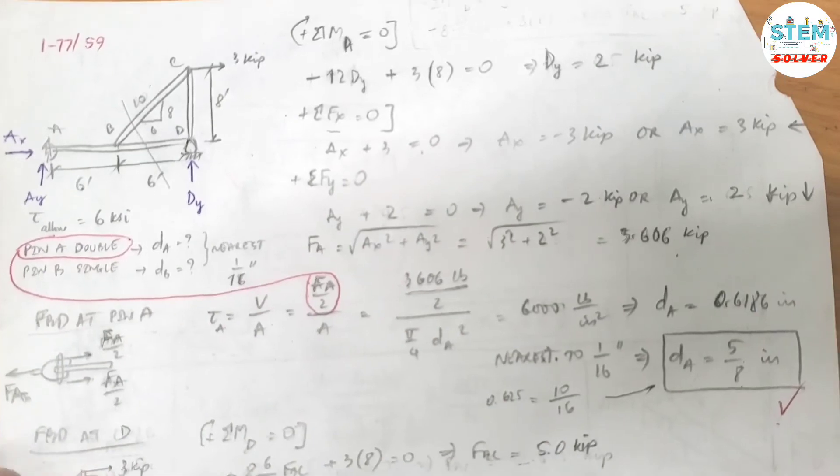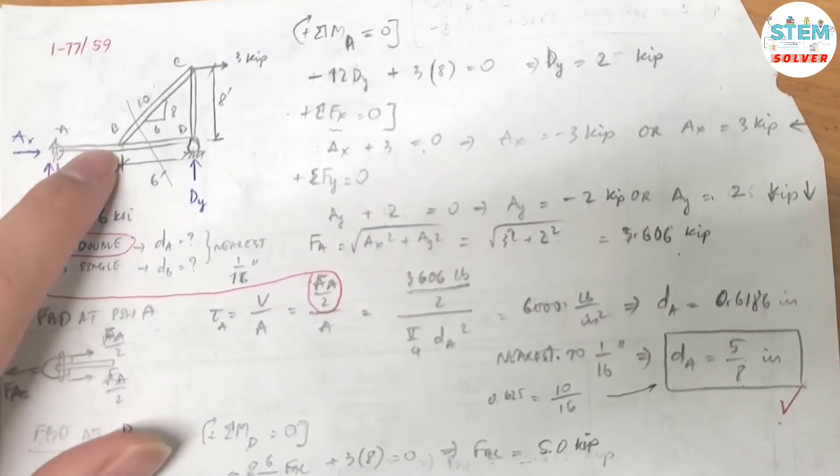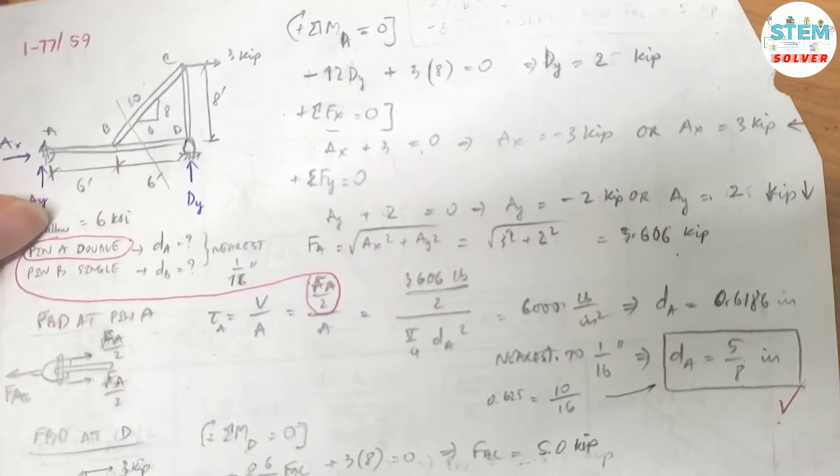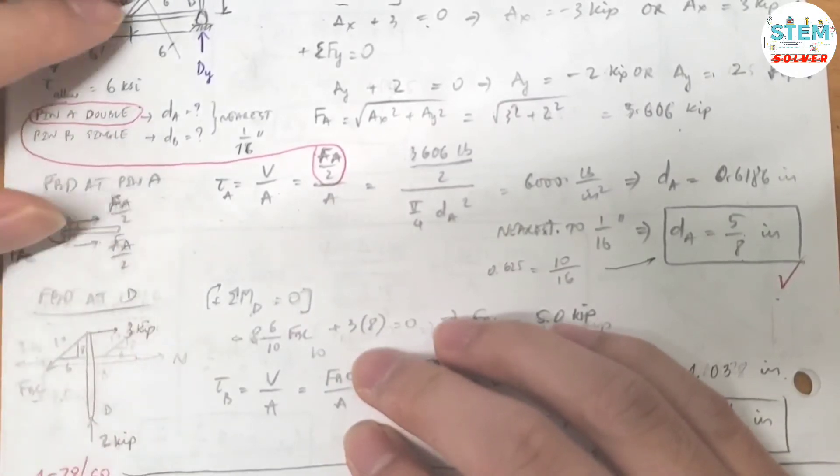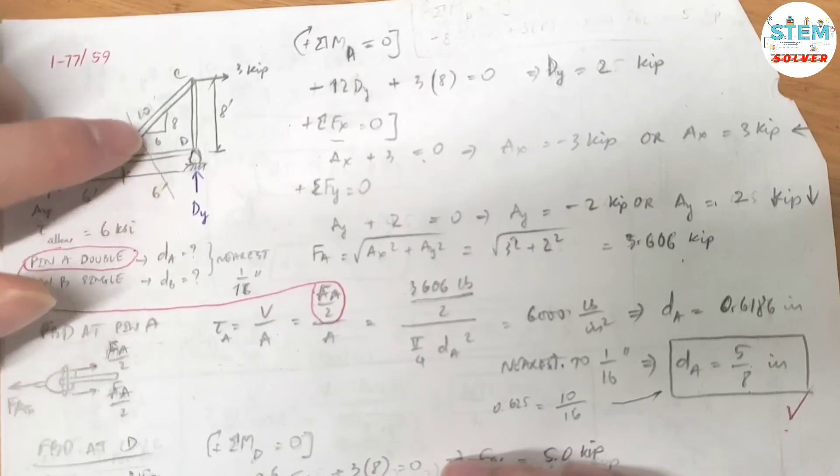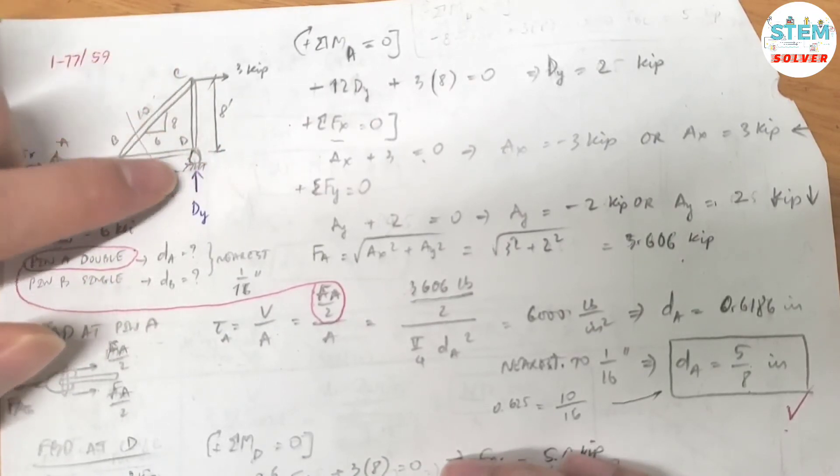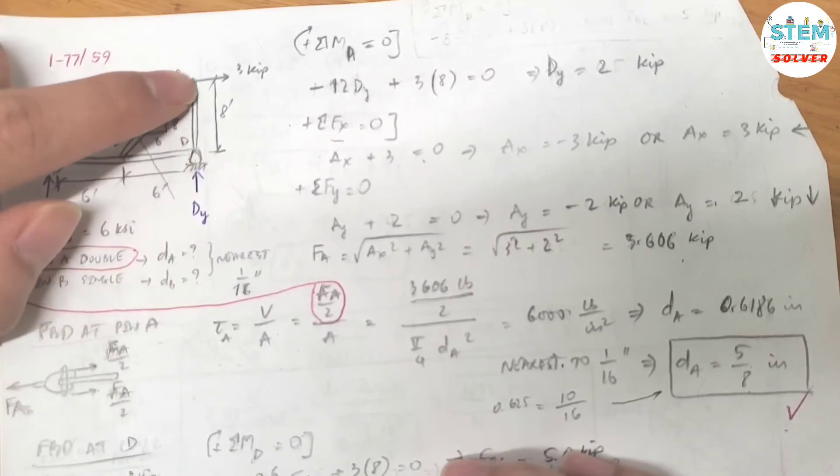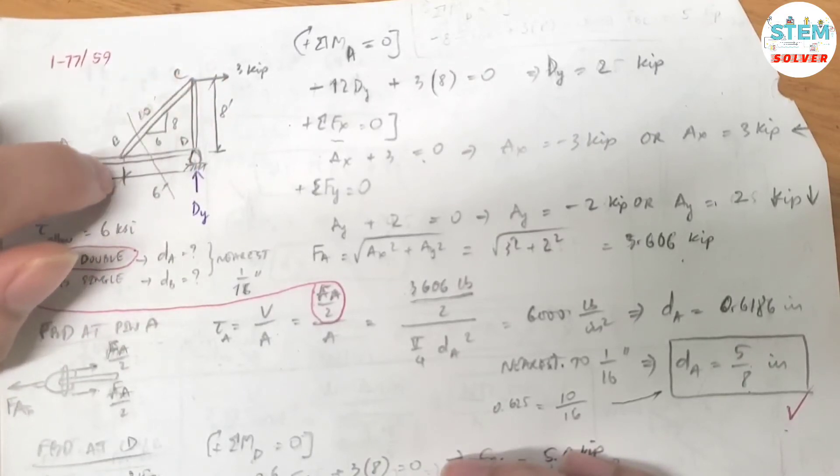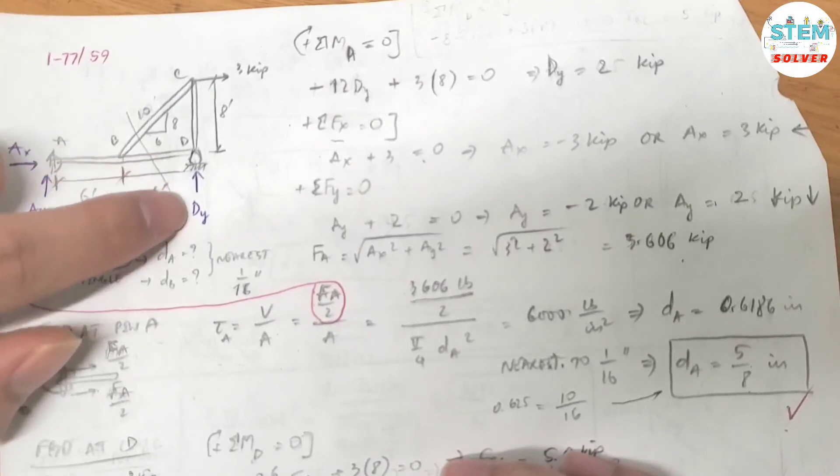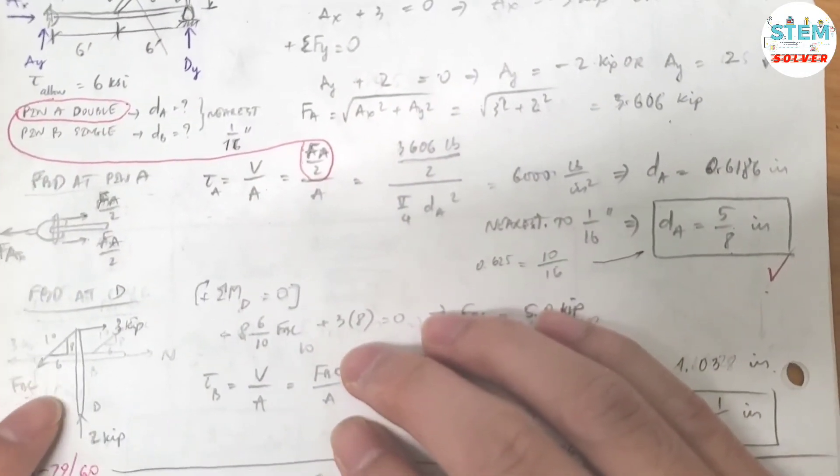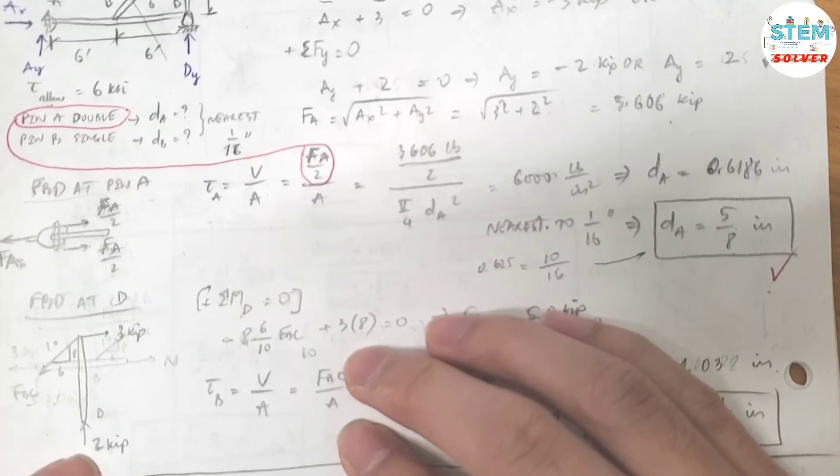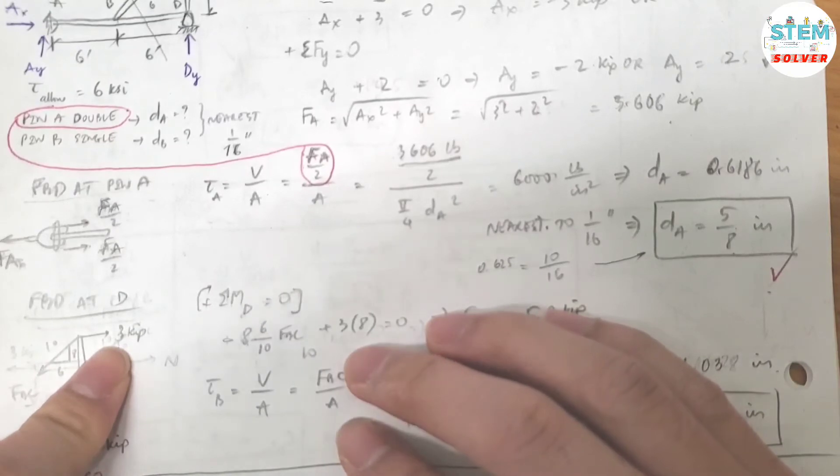Now let's find the diameter at pin B. Let me pull this up a little bit. Here is the free body diagram at D. Let's imagine you just cut this part and you just work on this side. So you have this portion: the force to the left and the force inclined down to the left, and force at D. So that will look like this. You have the beam and the force at D which is 2 kips up, for FBC, and 3 kips to the right.